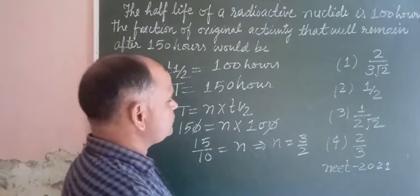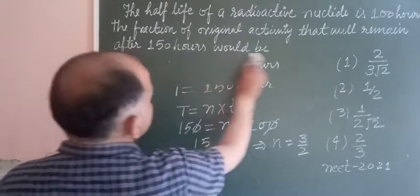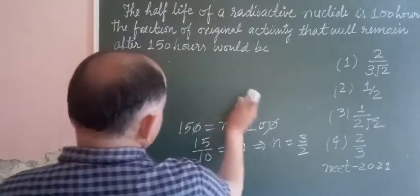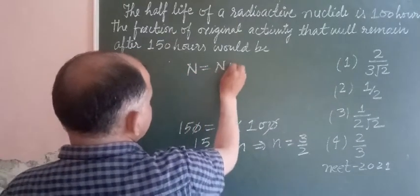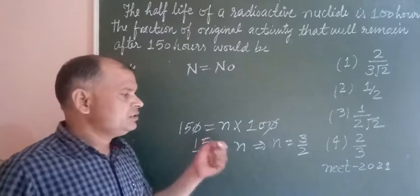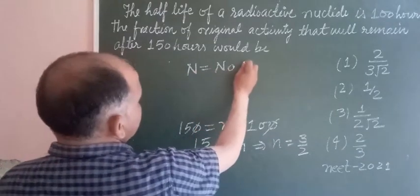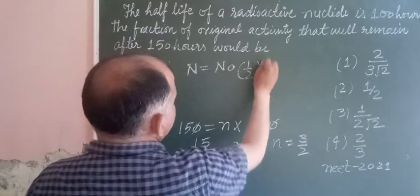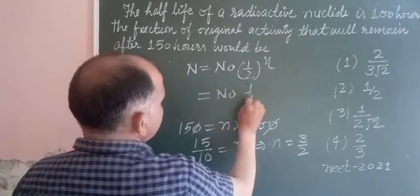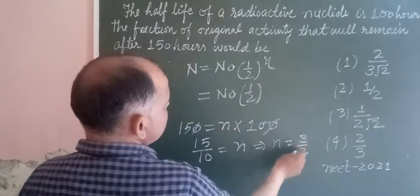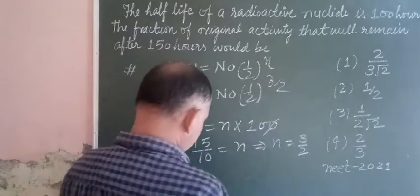Now, you know that the fraction after time T is given by N = N₀(1/2)^N. So we put N₀(1/2) to the power N. N is here 3/2.